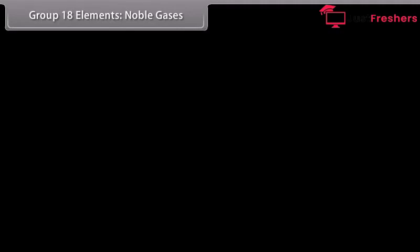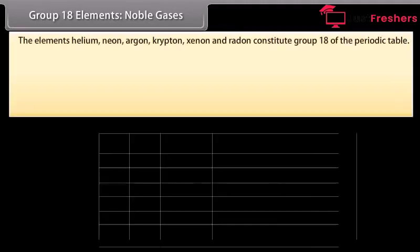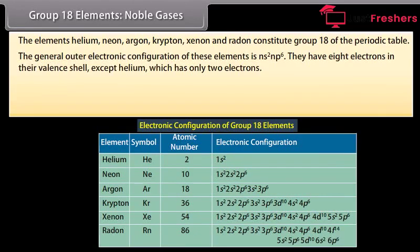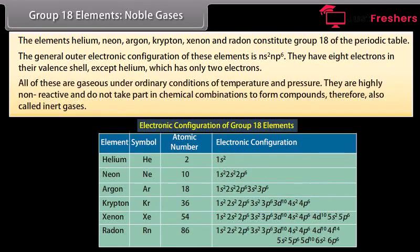The elements helium, neon, argon, krypton, xenon and radon constitute group 18 of the periodic table. The general outer electronic configuration of these elements is NS2-NP6. They have 8 electrons in their valence shell, except helium which has only 2 electrons. All are gaseous under ordinary conditions of temperature and pressure. They are highly non-reactive and do not take part in chemical combinations to form compounds; therefore also called inert gases.